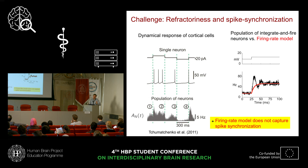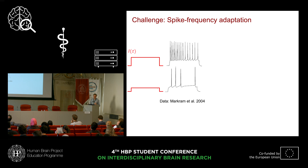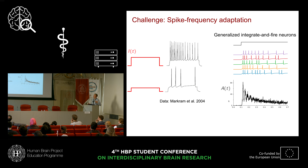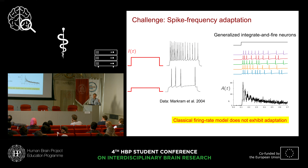The second challenge is spike frequency adaptation, a ubiquitous phenomenon across different cell types. It means that in response to a step current, first the firing frequency is high, but then if nothing changes, the firing rate goes down. This effect is readily obtained in integrate-and-fire models with some adaptation mechanism. The classical firing rate models do not have this effect, and it's unclear how spike adaptation mechanisms should be incorporated into a rate model.